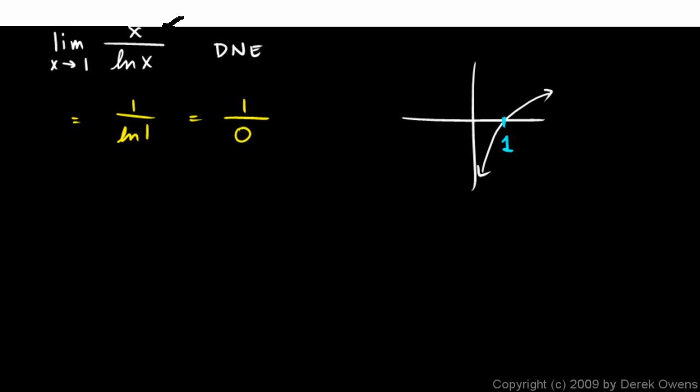But we have a case where there's a 0 denominator and a non-zero numerator, so that means we have a vertical asymptote at x equals 1.